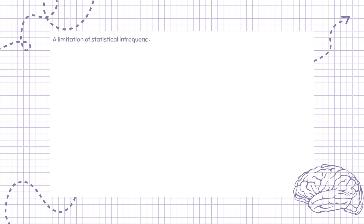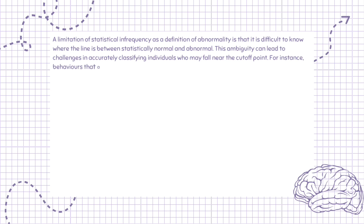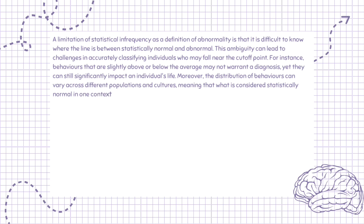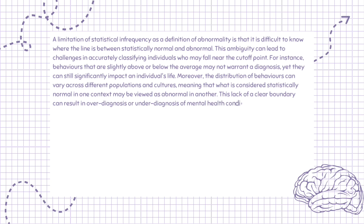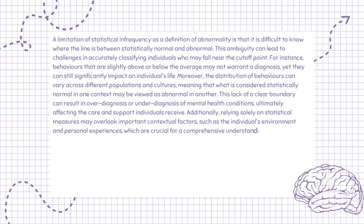A limitation of statistical infrequency as a definition of abnormality is that it is difficult to know where the line is between statistically normal and abnormal. This ambiguity can lead to challenges in accurately classifying individuals who may fall near the cut-off point. For instance, behaviors that are slightly above or below the average may not warrant a diagnosis, yet they can still significantly impact an individual's life. Moreover, the distribution of behaviors can vary across different populations and cultures, meaning that what is considered statistically normal in one context may be viewed as abnormal in another. This lack of a clear boundary can result in over-diagnosis or under-diagnosis, and relying solely on statistical measures may overlook important contextual factors such as the individual's environment and personal experiences.